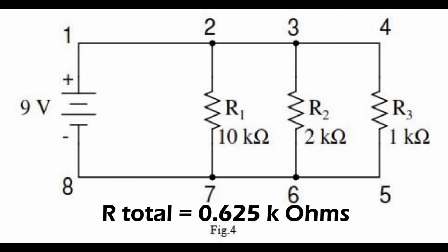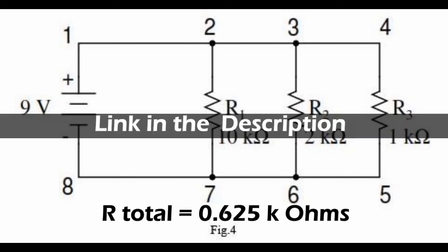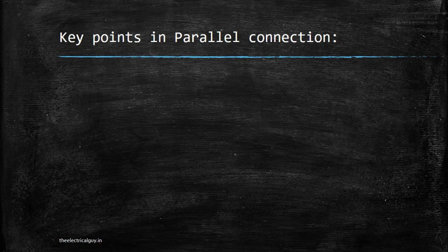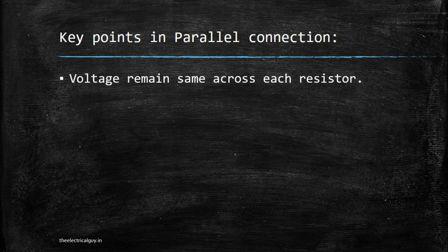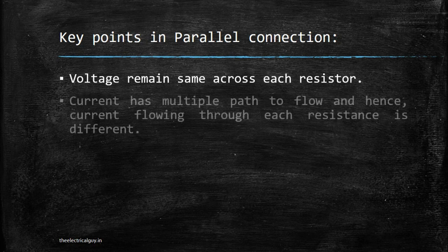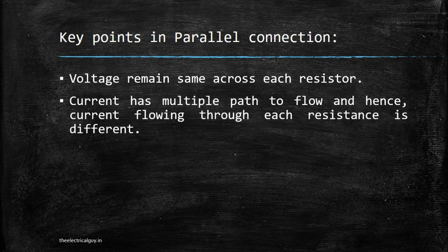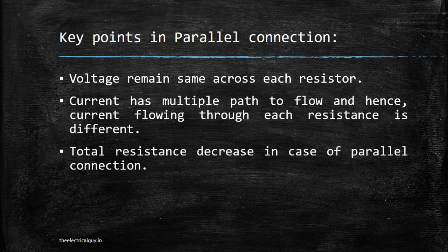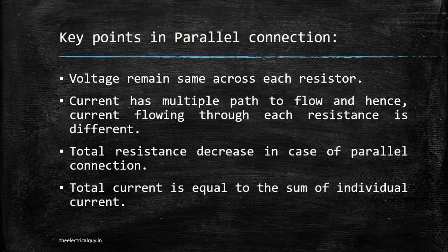If you want details on how resistance behaves in series and parallel, you can watch the linked video. The key points of parallel connection are: voltage remains the same across each resistor; current has multiple paths to flow so current through each resistance is different; total resistance decreases in parallel connection; and total current equals the sum of individual currents.